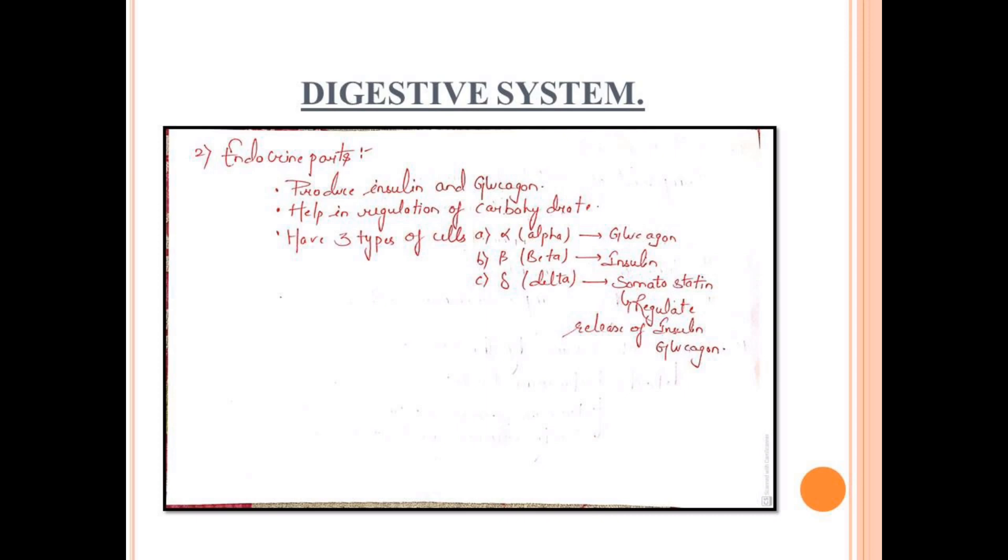The endocrine part of the pancreas produces insulin and glucagon. Their function is to regulate carbohydrates in the body. There are three secreting cells: alpha, beta, and delta. Alpha secretes glucagon, beta secretes insulin, and delta secretes somatostatin. Somatostatin controls the amount of insulin and glucagon.